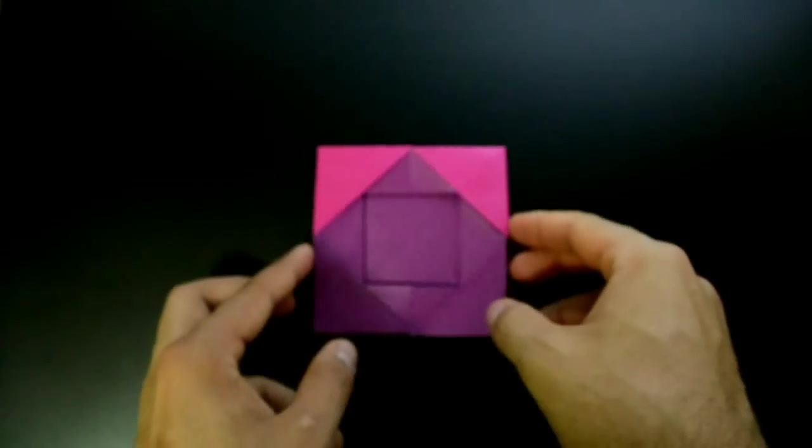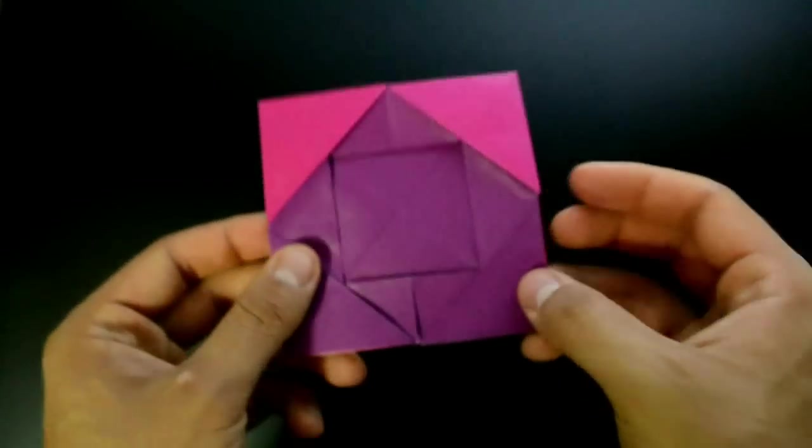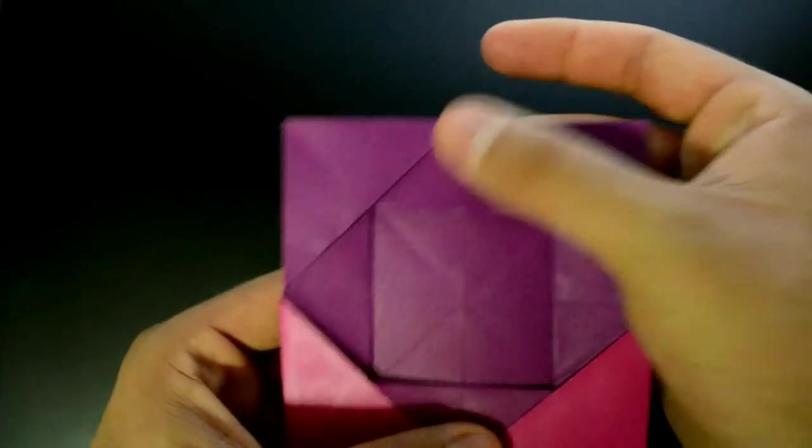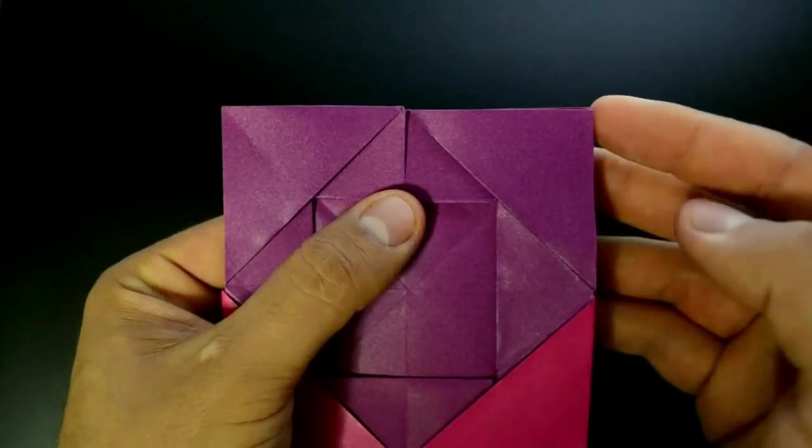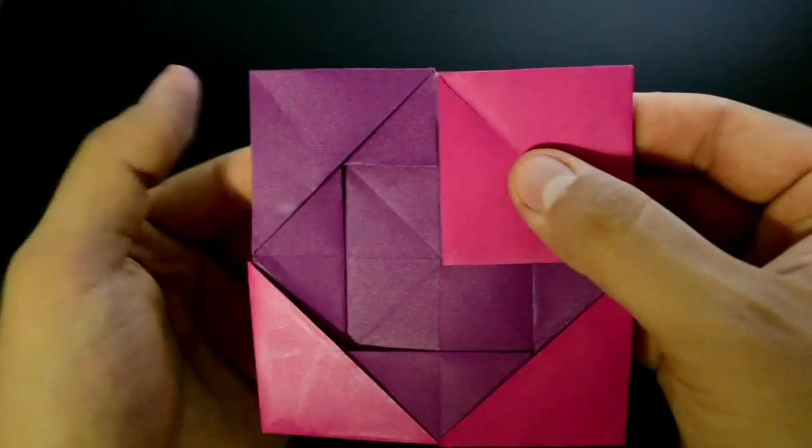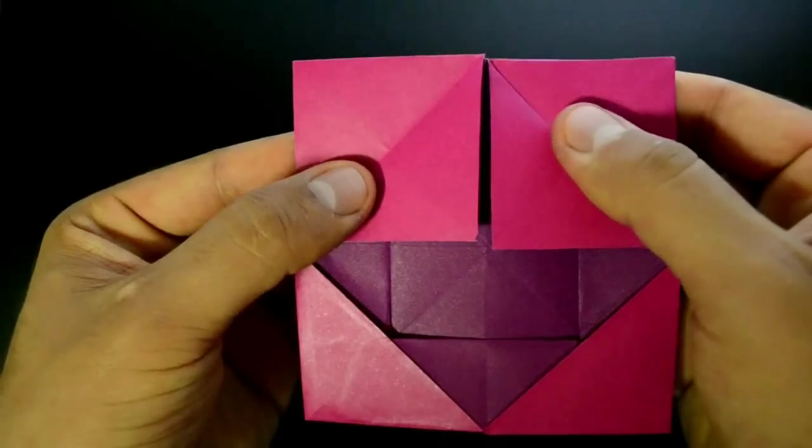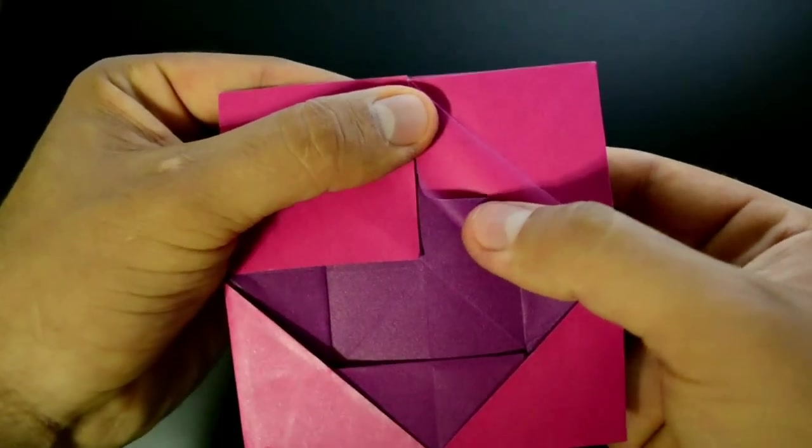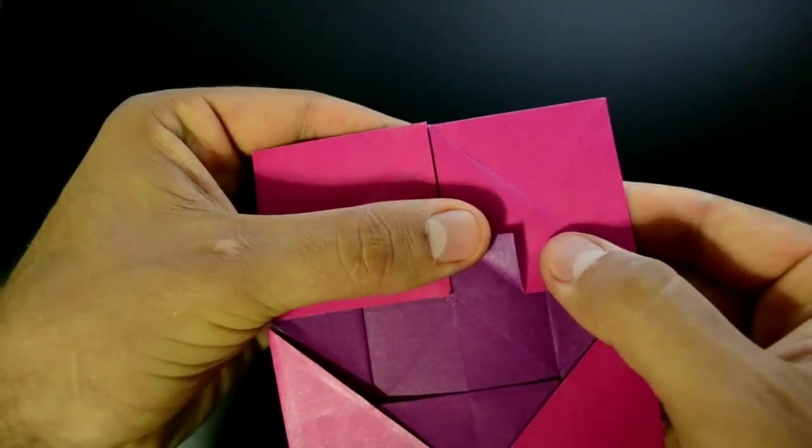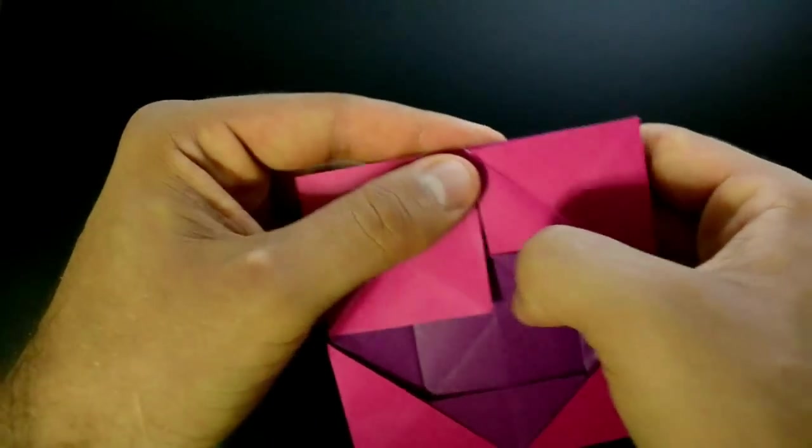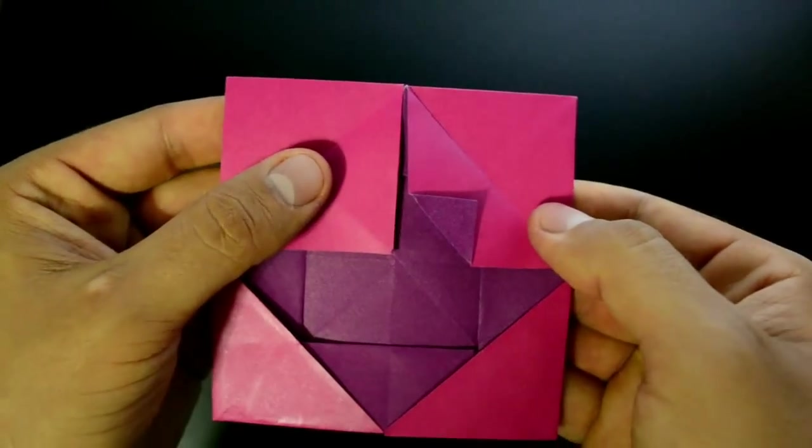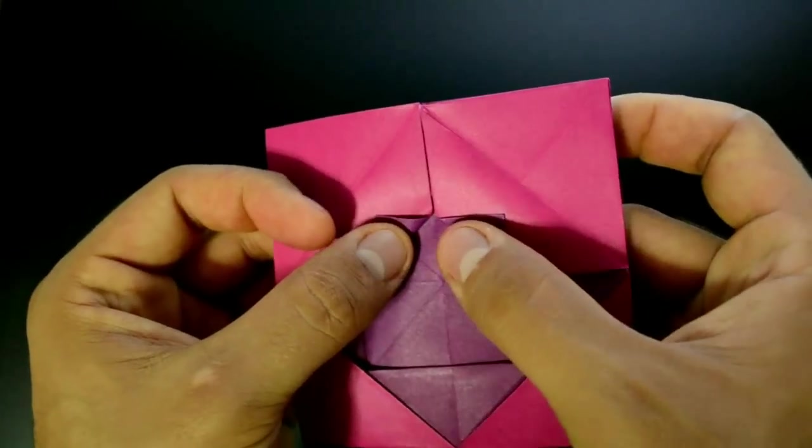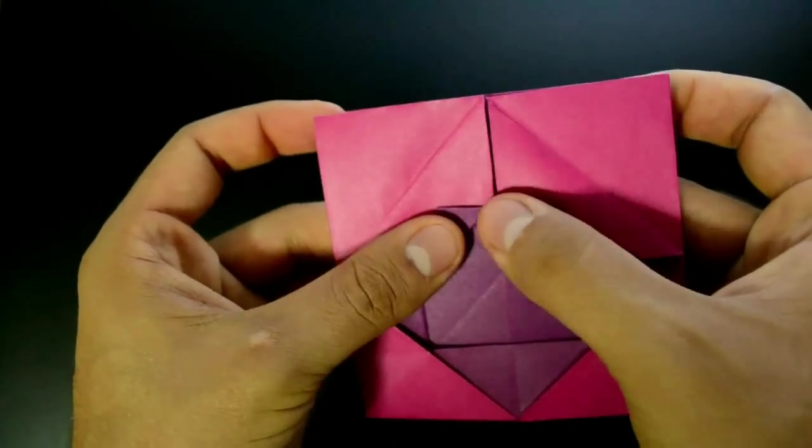Right. On the next step we will make the heart. First rotate in this position. Fold down these two corners here, fold up just a little bit.